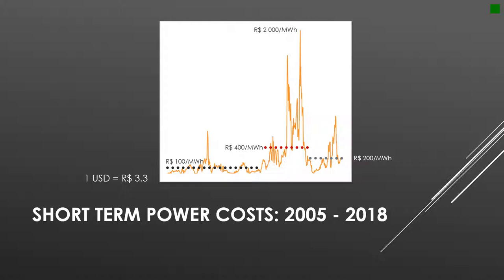Basically, what I see is three timeframes. The first one, up to 2011, prices were very low and well-behaved. Then they started to climb dramatically, reaching an average of 400 reais per megawatt-hour and a huge volatility. And for the last three or four years, we've had fairly well-behaved prices, but a lot of volatility as well, with an average around 200 reais per megawatt-hour.